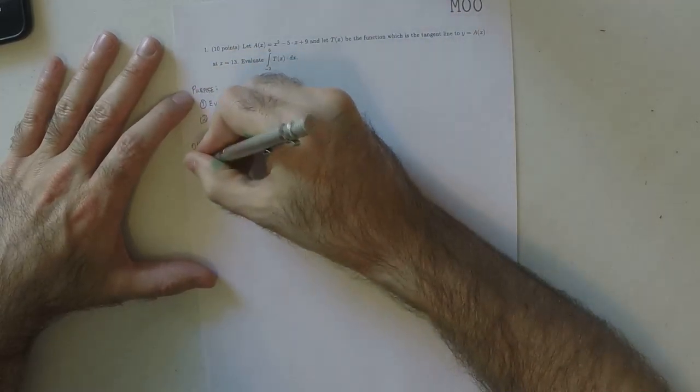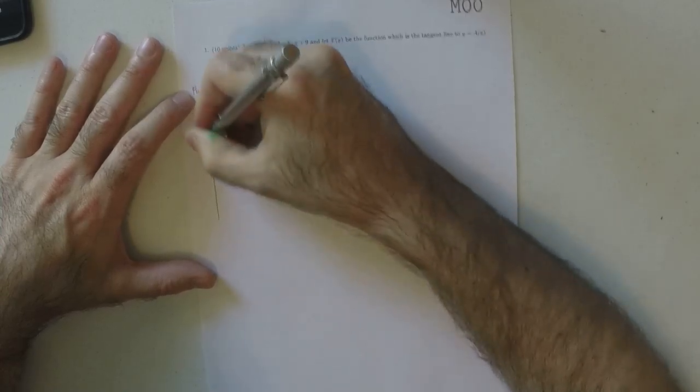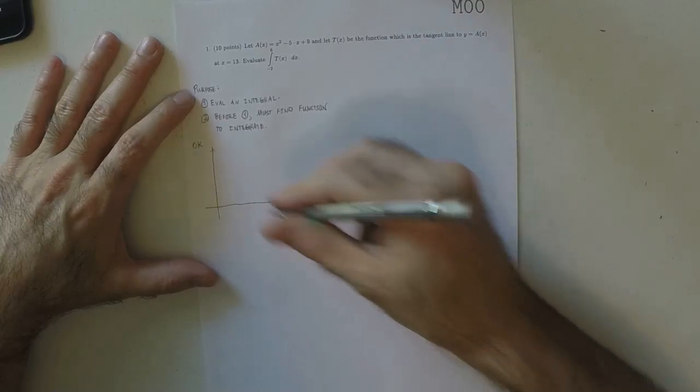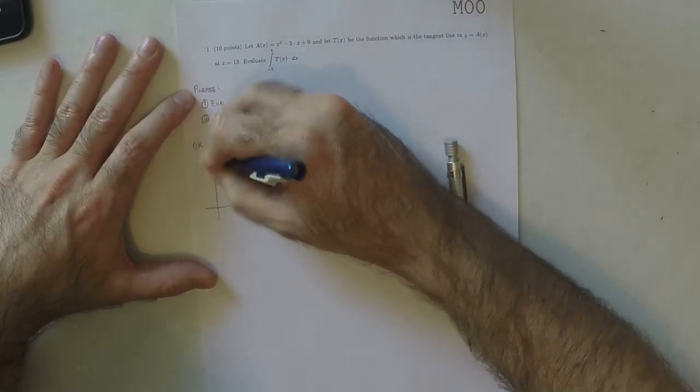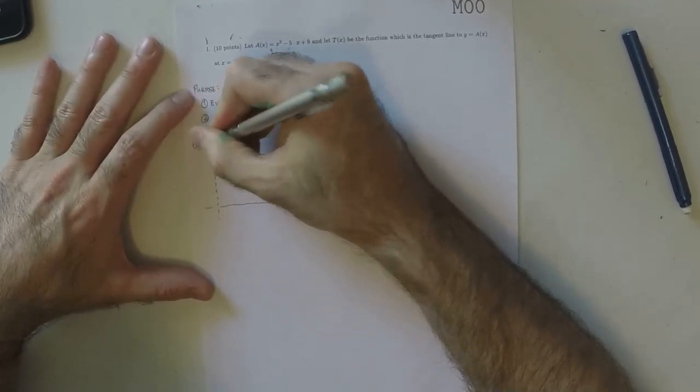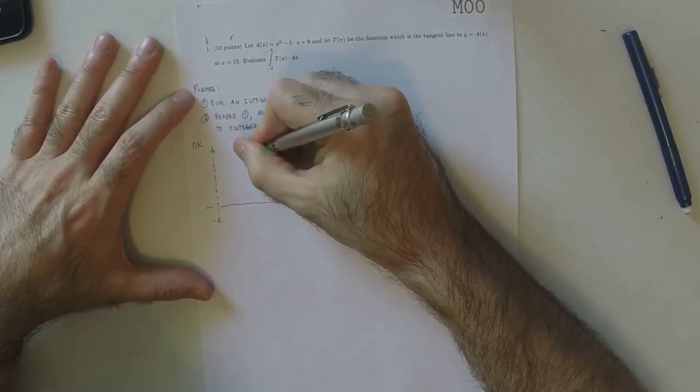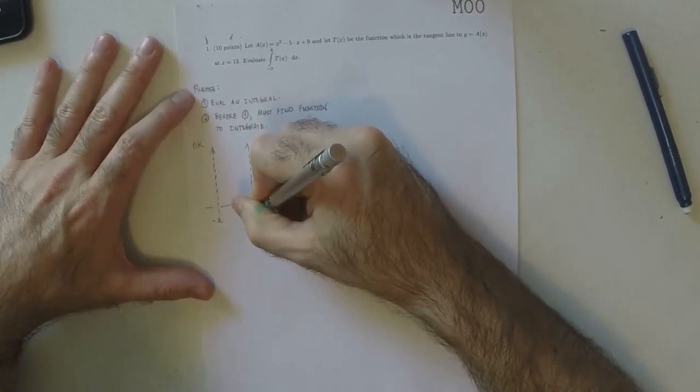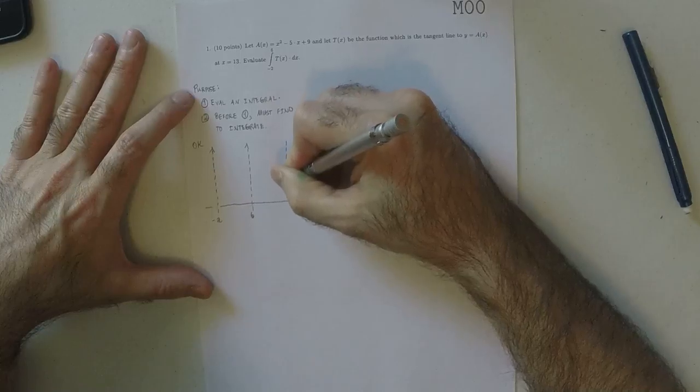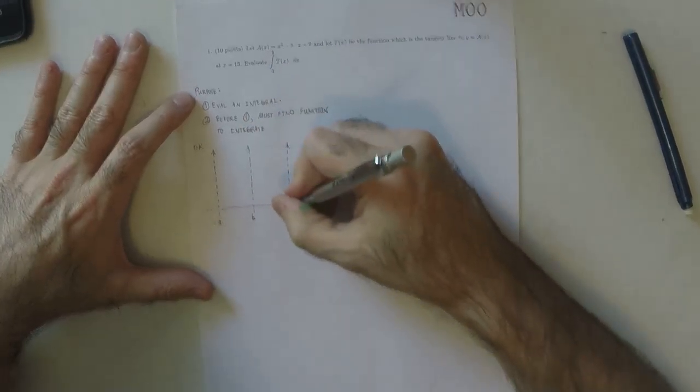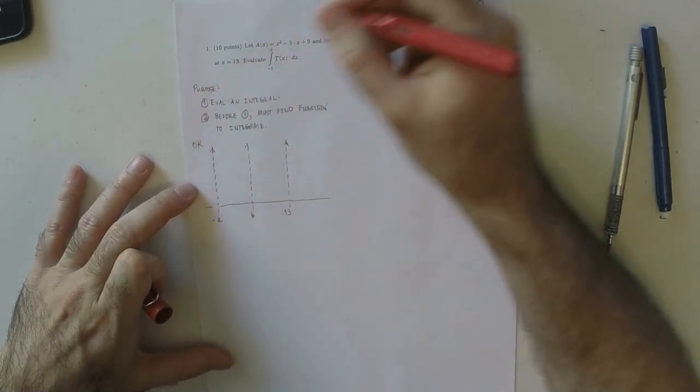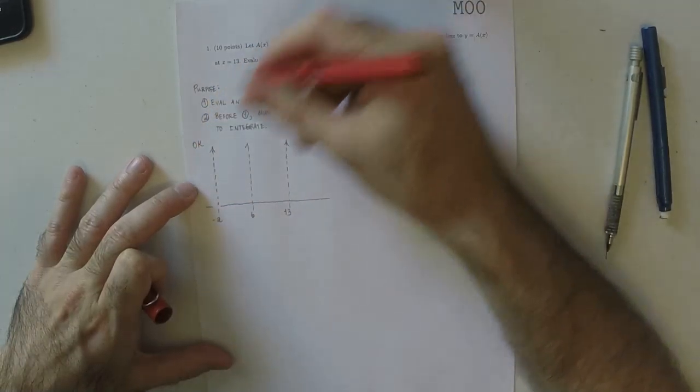Alright, so specifically what we're told is that we want an integral to occur over an integral of negative two to six. And then we've got a function that has a tangent line at 13. So this could be like—since A is quadratic, I'll draw something more interesting.